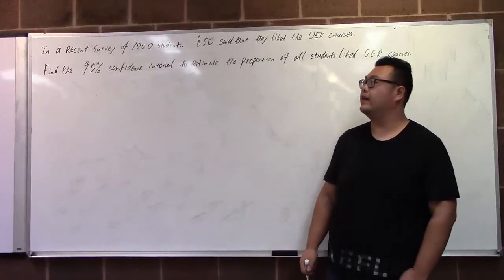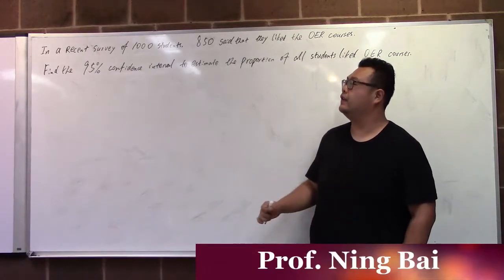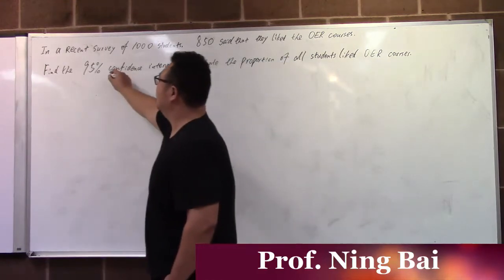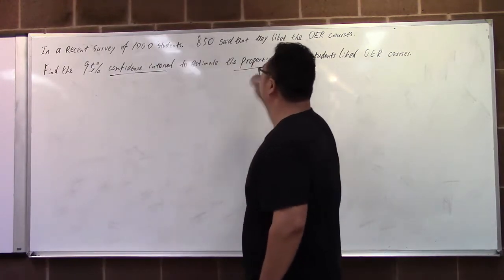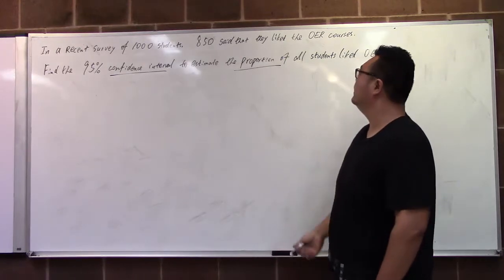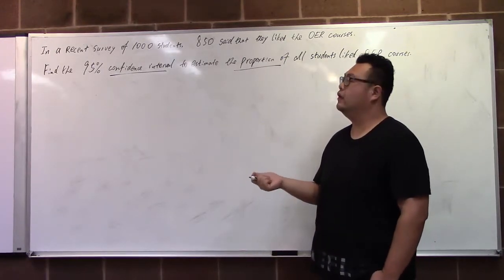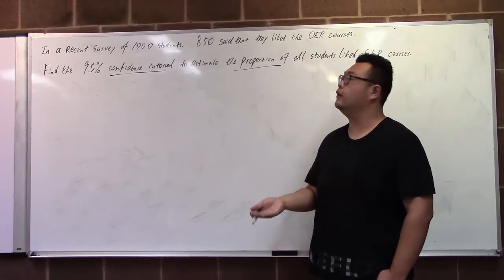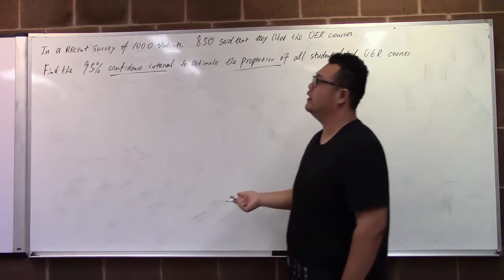Welcome to HelpYourMath.com. This question is to find the confidence interval to estimate the population proportion. For the population proportion, we use the z-score, and we see the question.